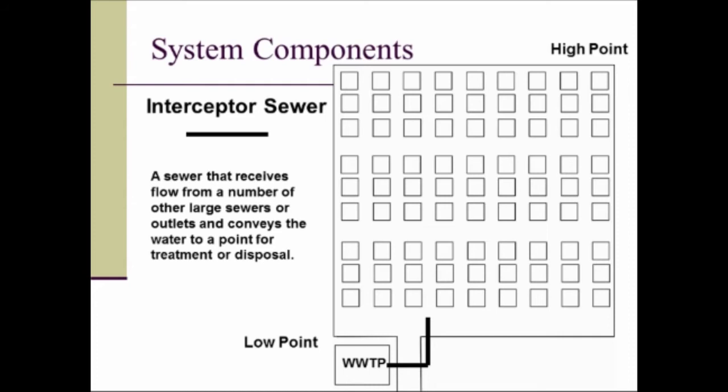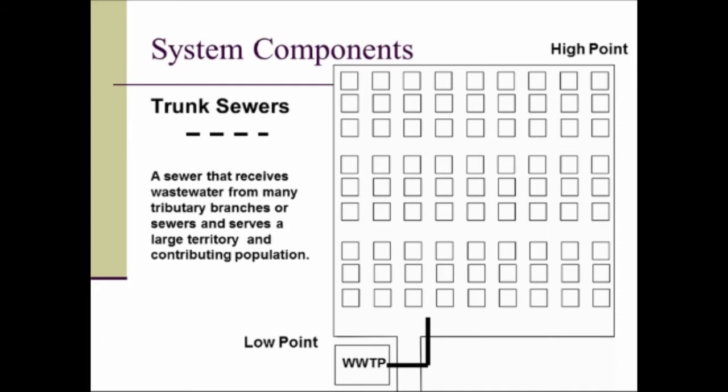Now we add in some trunk sewers, and these run from key locations through the town. Trunk sewers receive wastewater from many tributary branches or sewers that serve large territories and large populations. The trunk sewer delivers its water to the interceptor sewer and then ultimately goes to the wastewater treatment plant.